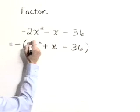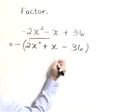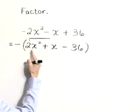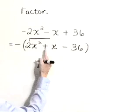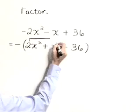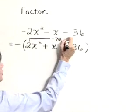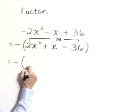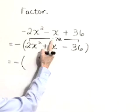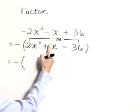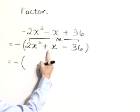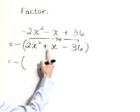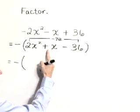Now I'm going to use this factoring by grouping process where we multiply our outer coefficients. 2 times negative 36 is negative 72. And now let's find factors of negative 72 that sum to this middle coefficient 1. Those factors are a positive 9 and a negative 8.